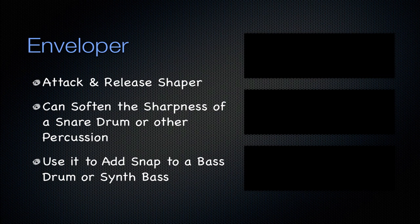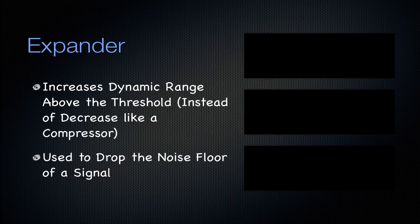You can also use the Enveloper to add snap to a bass drum or synth bass. Next is going to be the Expander — it's the opposite of a compressor. It increases the dynamic range above the threshold instead of decreasing it, and it's used to drop the noise floor out of a signal. If you have a microphone hooked up to your computer and just recording, you can hear — if you turn up the signal — a lot of background noise, hum from the circuit in the microphone or the interface. The Expander compresses parts of your signal below the threshold to drop that noise floor, that buzzing and humming, out of the signal.